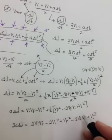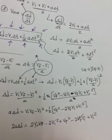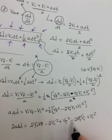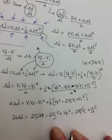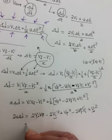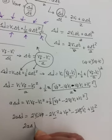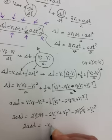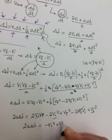2VI VF minus 2VF VI, these are going to cancel each other out. Negative 2VI squared plus VI squared is going to leave me with a minus VI squared. So I'm going to have 2a delta D is equal to minus VI squared plus VF squared.